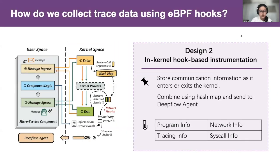Secondly, how do we collect trace data using eBPF hooks? For the convenience of later assembling, we need to collect four types of data: program, network, tracing, and syscall. Some of them are collected when a syscall enters the kernel, and some are collected at the exit point. Therefore, each syscall is instrumented by two hooks, and the enter and exit information are combined within a HashMap.